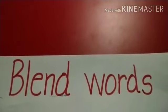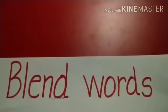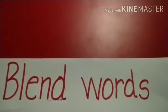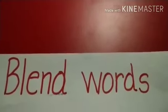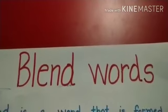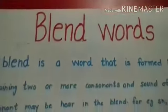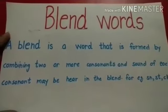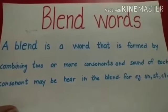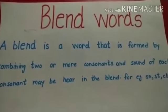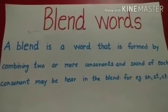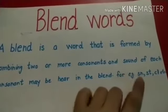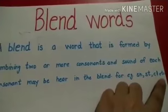Our today's topic is blend words. So first of all I will explain what a blend is. A blend is a word that is formed by combining two or more consonants, and the sound of each consonant may be heard in the blend. For example: snore, stir, clear, etc.